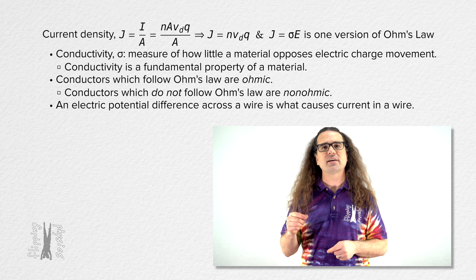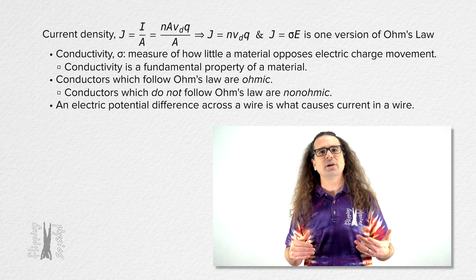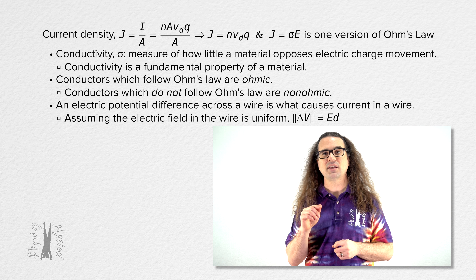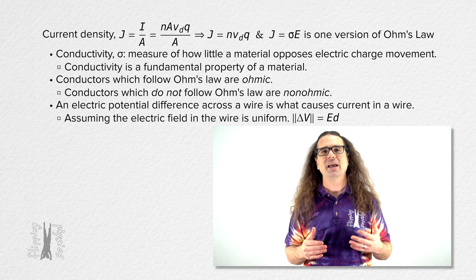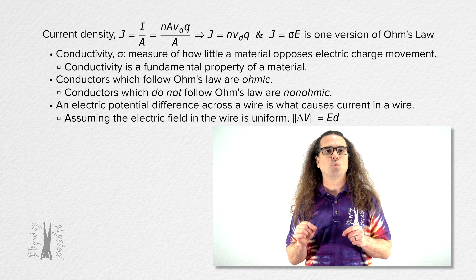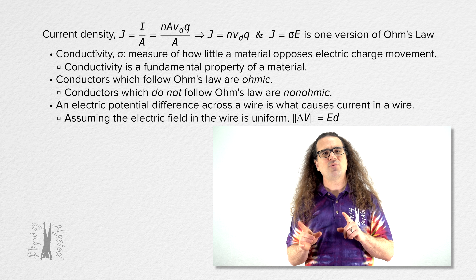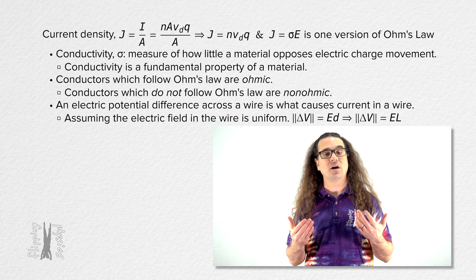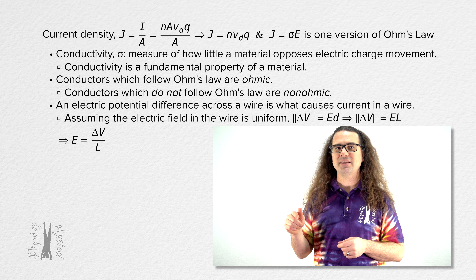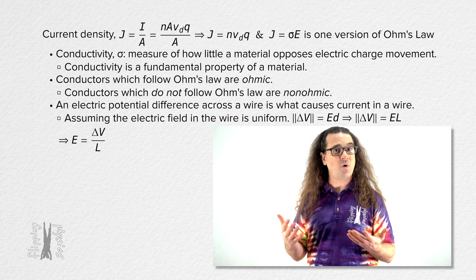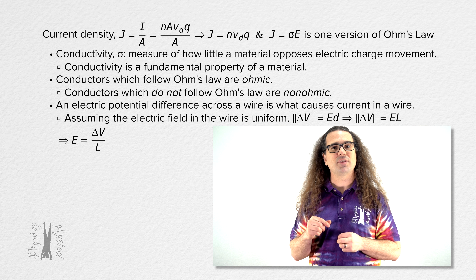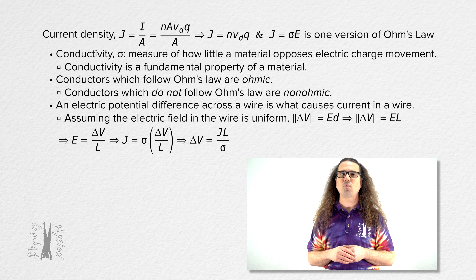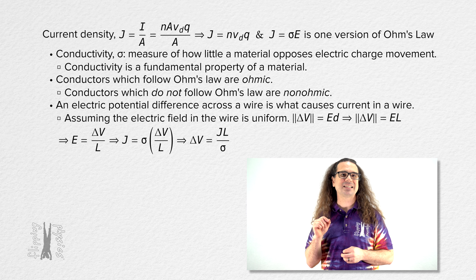An electric potential difference across a wire is what causes current in the wire, and we are assuming the electric field created in the wire is uniform. The magnitude of the electric potential difference across a wire equals the electric field times d, a distance parallel to the electric field — derived in a previous lesson. We will use capital L for the length of the wire. The electric field in the wire equals the electric potential difference across the wire divided by the length of the wire. Substituting into the current density equation and solving for electric potential difference, it equals current density times the length of the wire divided by the conductivity of the wire material.